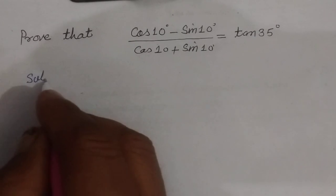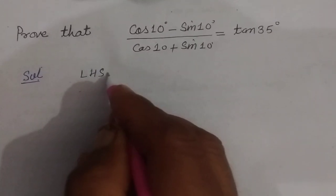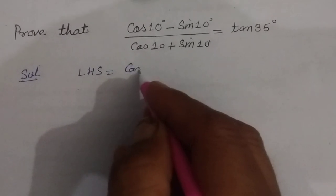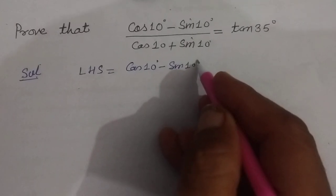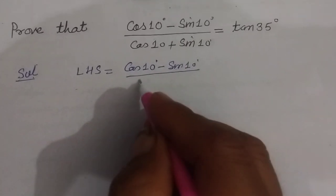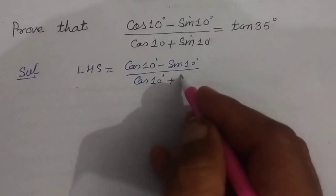So student, first we take the LHS of the question, that is cos 10 minus sin 10 upon cos 10 plus sin 10.